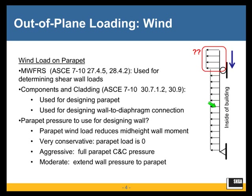For determining shear wall loads and in-plane loads of perpendicular shear walls, we'd use the main wind force resisting loads. For actual out-of-plane design, we use components and cladding loads, and there are three things to consider: the design of the parapet, with clear requirements in ASCE 7-10; the wall-to-diaphragm connection — the anchor bolts, bearing plate — where loading is fairly clear; and designing the wall itself, which is where things get less clear.